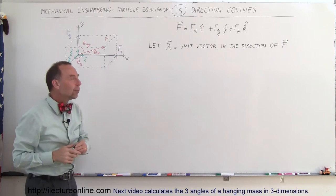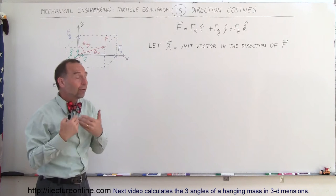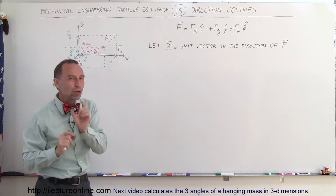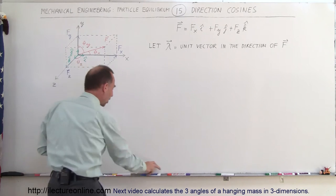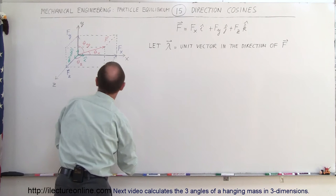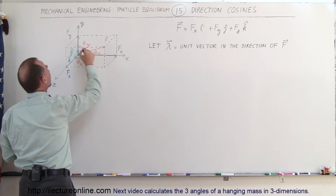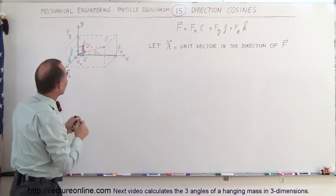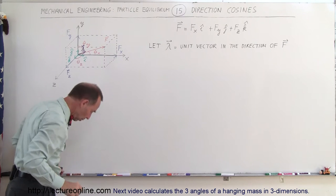Now let's say we have another variable — let's call it lambda. We make it into a vector and let lambda represent the unit vector in the direction of the f-vector. So this here would be considered the unit vector in the direction of the force vector. It's only one unit long.